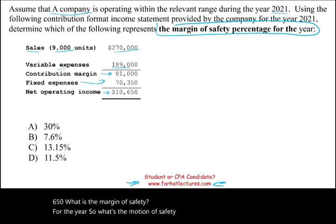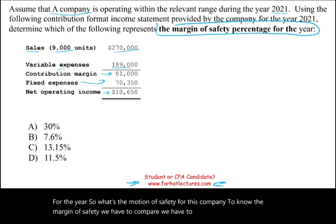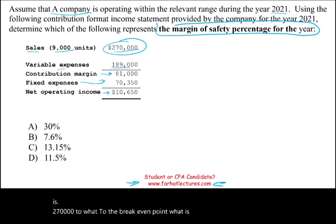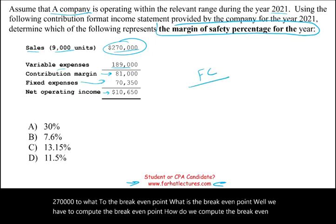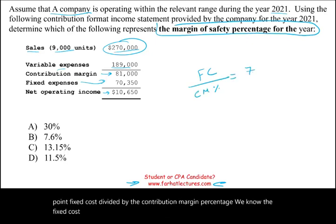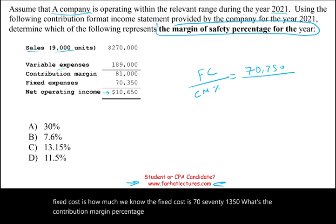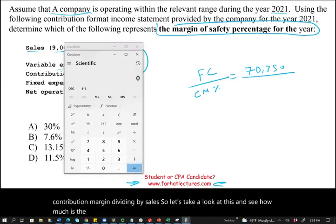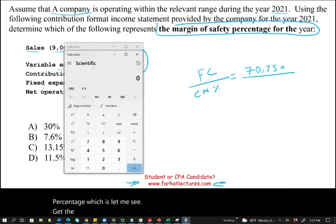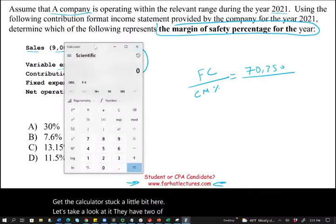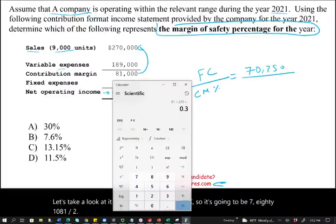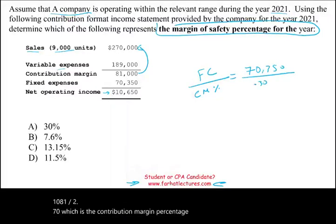To find the margin of safety, we have to compare $270,000 to the break-even point. So we need to compute the break-even point — fixed cost divided by the contribution margin percentage. Fixed cost is $70,350. The contribution margin percentage is contribution margin divided by sales: $81,000 divided by $270,000, which gives us 0.30 or 30%. So the break-even in sales is $70,350 divided by 0.30, which gives us $234,500.